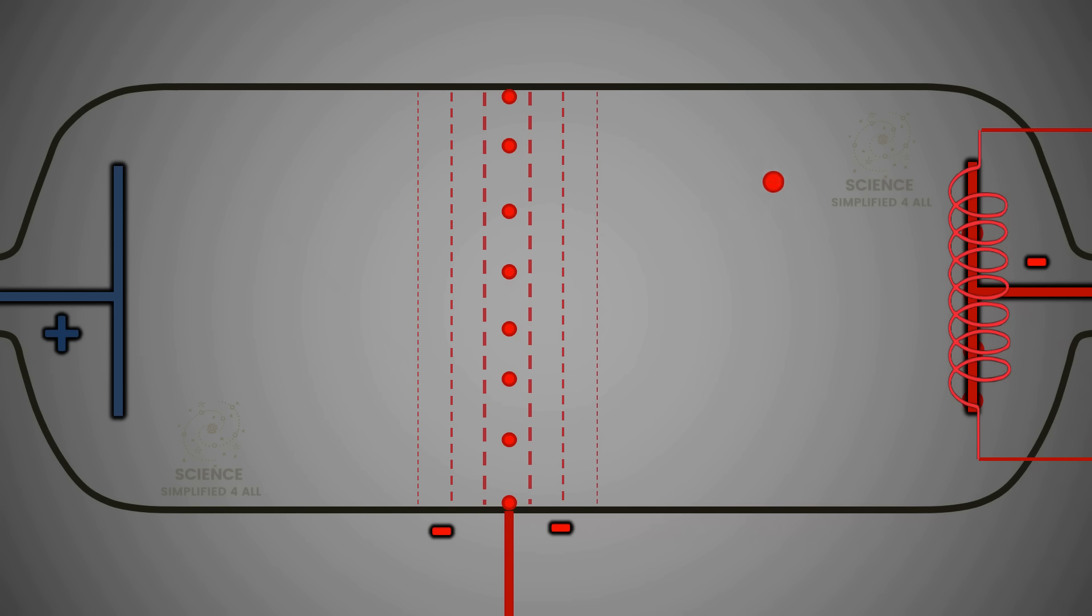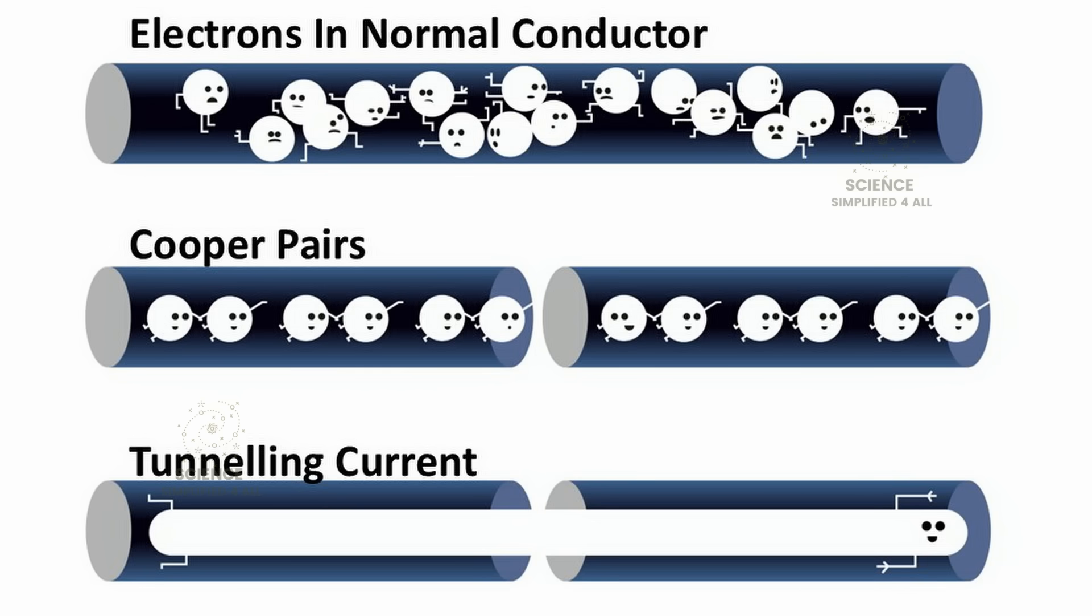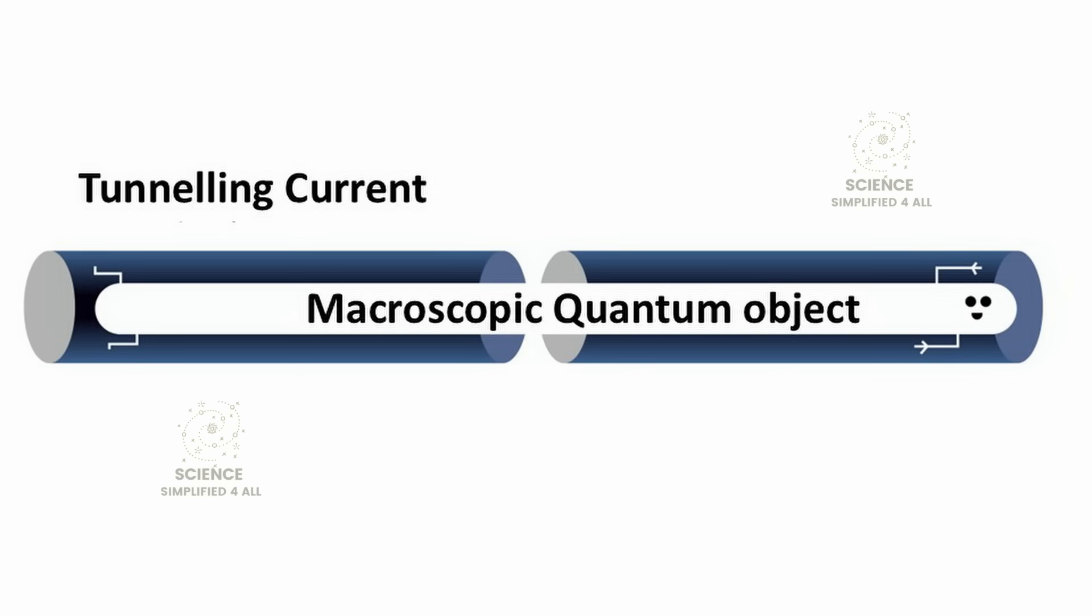Normally, quantum effects are seen only in very small particles, such as electrons. But in this case, the current flowing through the superconducting circuit contained millions of electrons. And yet, the entire current behaved as if it were a single quantum object, almost like a single atom.